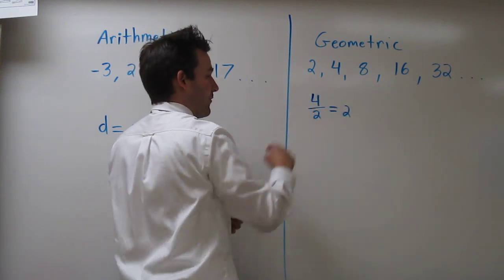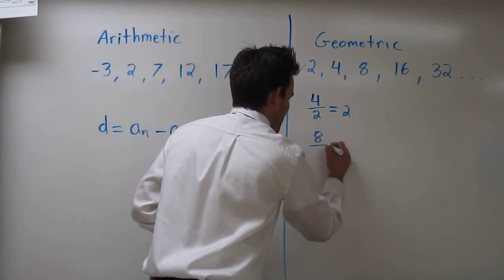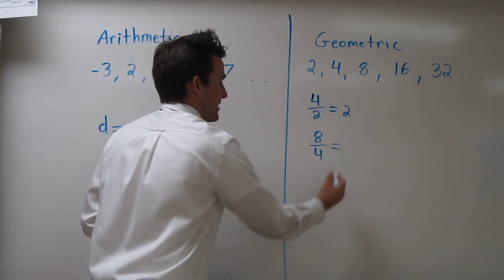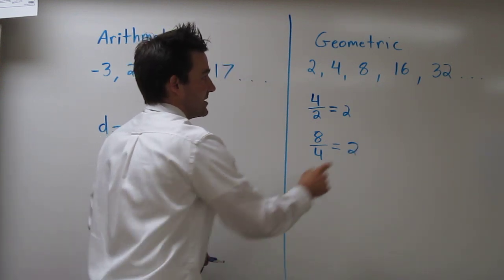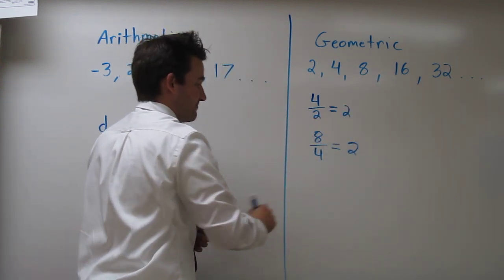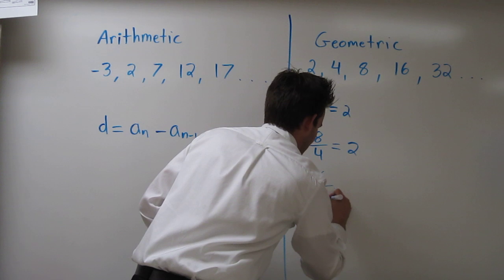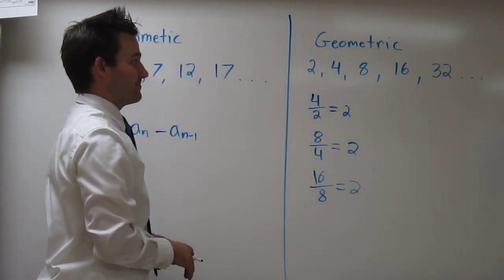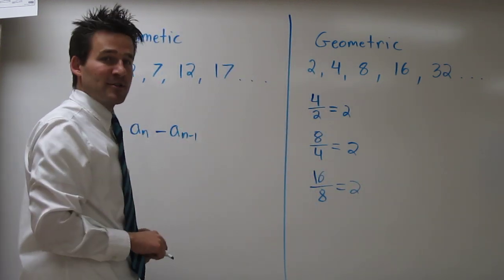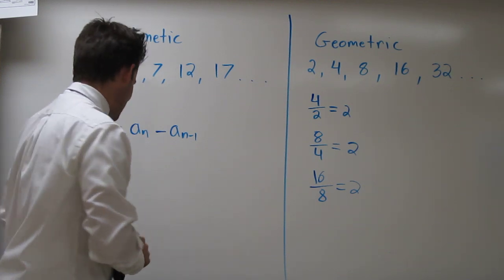Let's try it with the 8 and the 4. 8 over 4, well that also equals 2. 16 over 8, that equals 2. And the last one, 32 over 16, well that equals 2 as well.